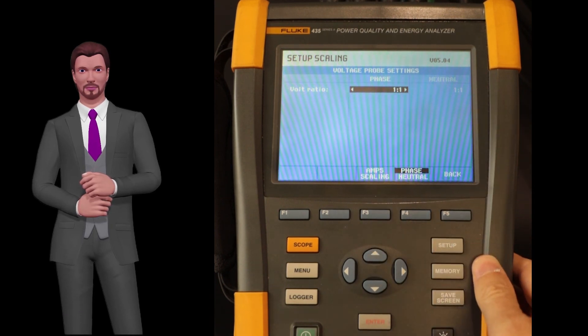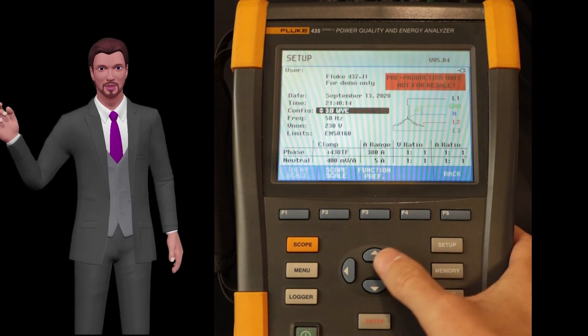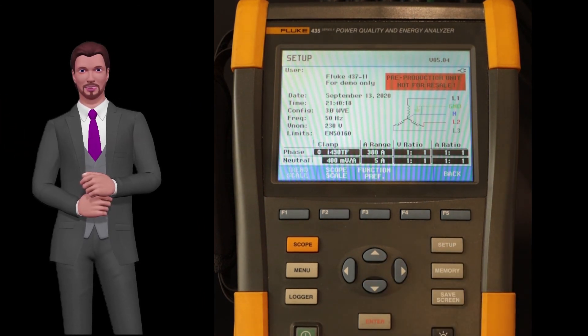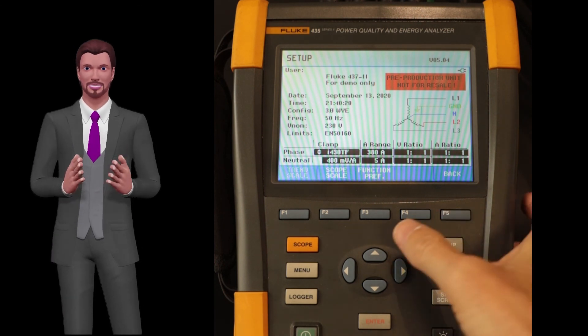Finally, by pressing the F5 back key, we return to the main settings menu. But now, our analyzer will be properly configured for the electrical system in which we are going to perform the measurements.